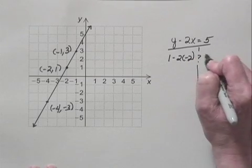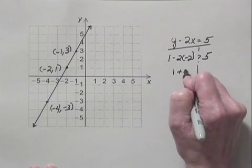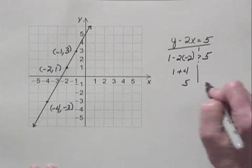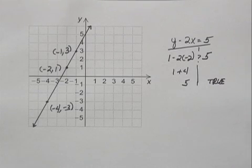On the left I have this computation. I'm asking if this is equal to 5. I have 1 plus 4, or 5. So this is true, and that tells us that the point (-2, 1) is a third point on this line.